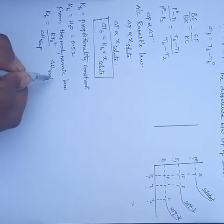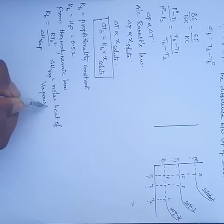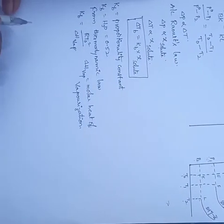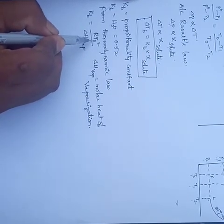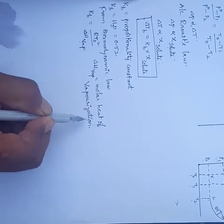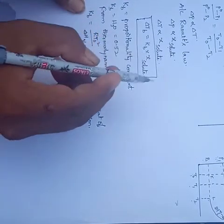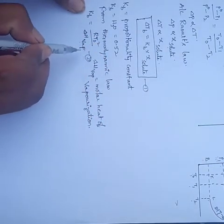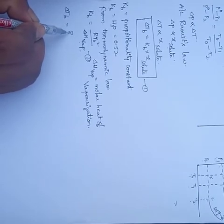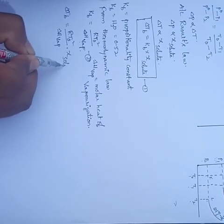Change in enthalpy of vaporization is equal to the molar heat of vaporization. Here R indicates universal gas constant, T0 is the boiling temperature of the pure solvent, and delta H is the molar heat of vaporization. Substituting the expression for Kb gives: delta Tb equals (R T0 squared / delta H_vap) times mole fraction of the solute.